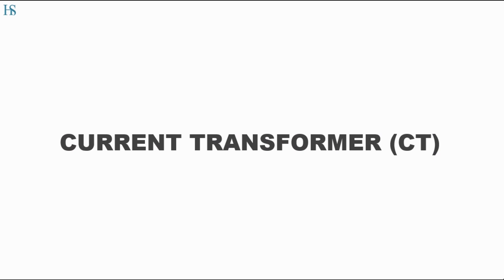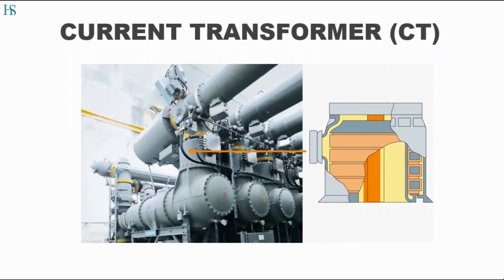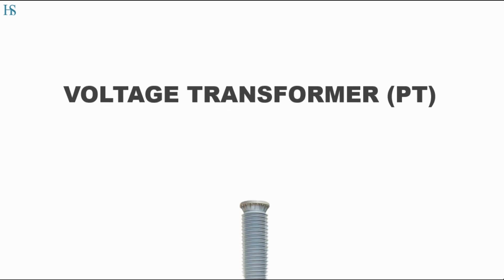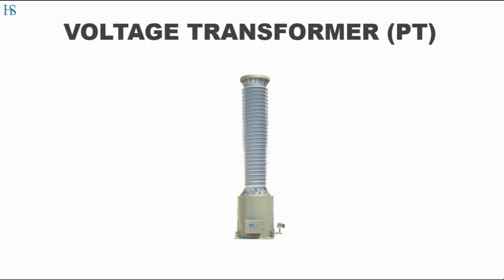The next important component is the current transformer, also called a CT. It is a protective device used for measuring the electric current, that is why it is also known as an instrument transformer. Similarly, we have voltage transformers, also known as potential transformers or PT. This is used as a protective relay, for system control and indication of power flow. It is also used for revenue metering.